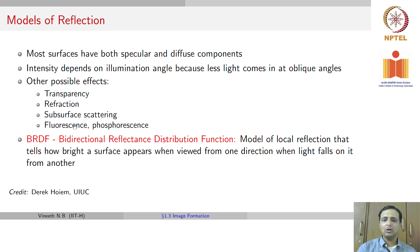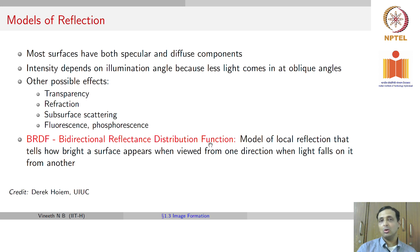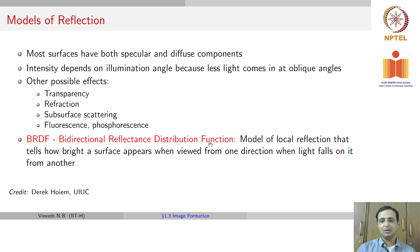An important concept studied here is called the BRDF, or the Bidirectional Reflectance Distribution Function, which is a model of local reflection that tells us how bright a surface appears from one direction when light falls on it from another pre-specified direction. There are models to evaluate how bright the surface appears.